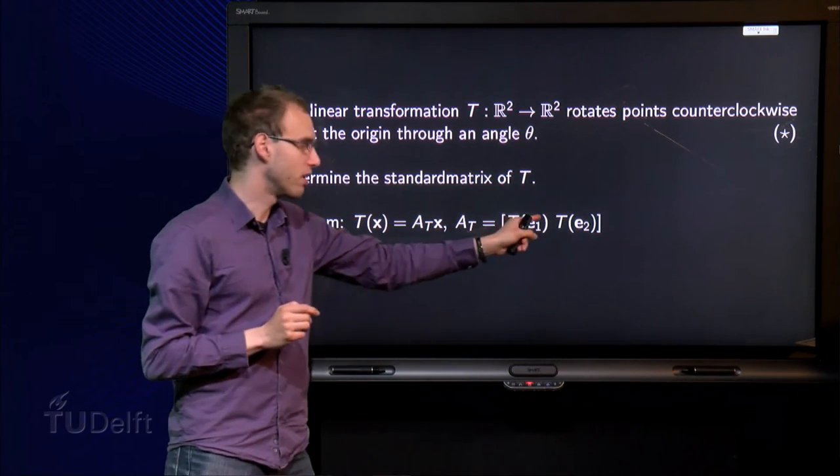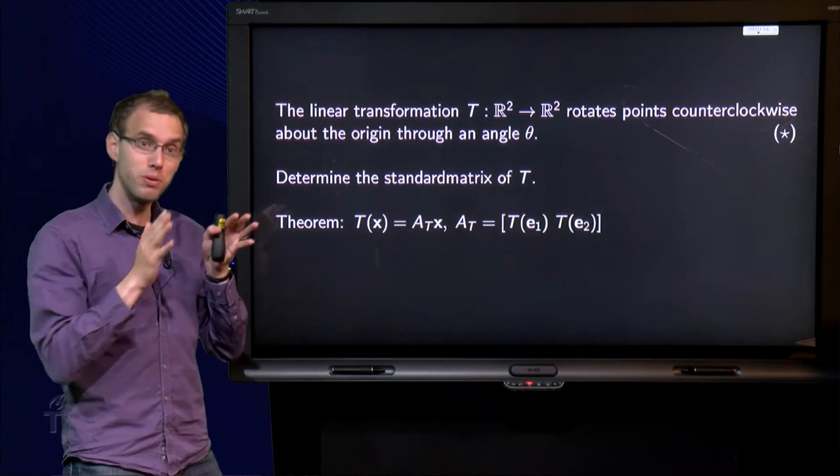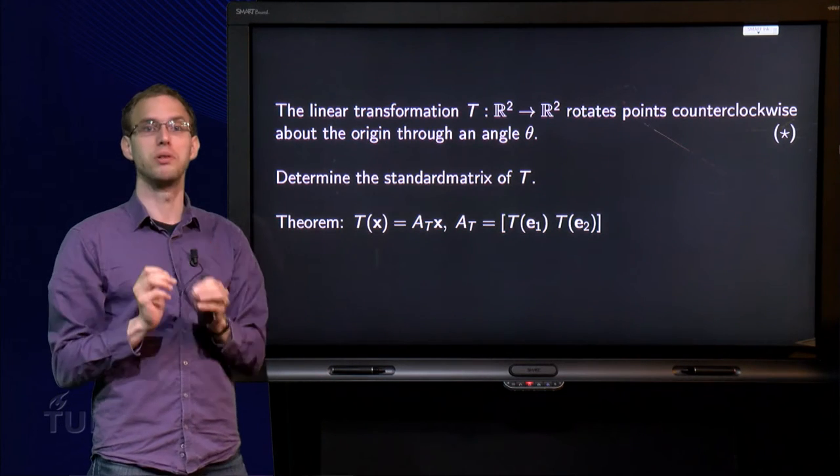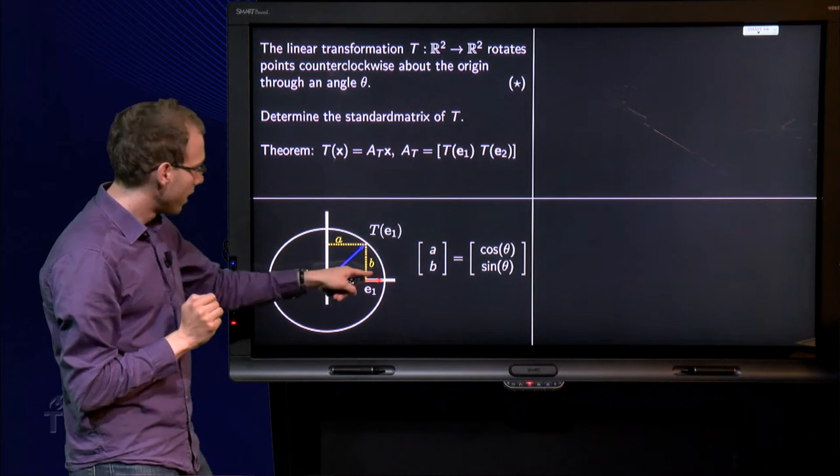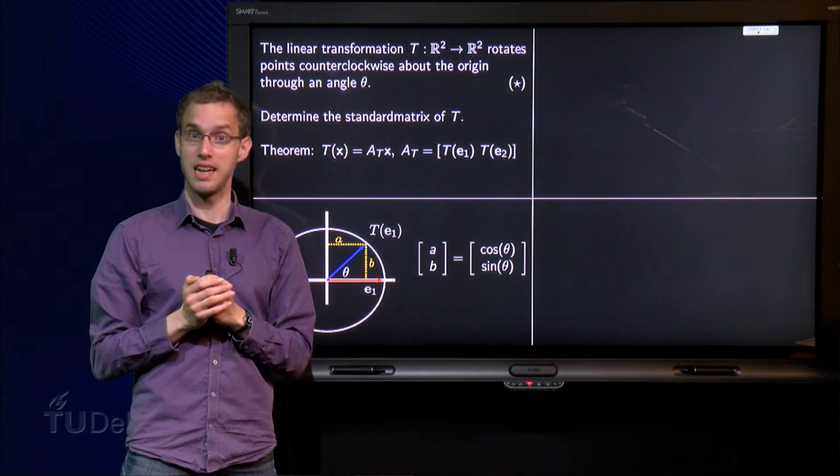So that's what we are going to do. We are going to compute T(e₁) first, and then we are going to compute T(e₂). So let's see. Here, the red vector is e₁.